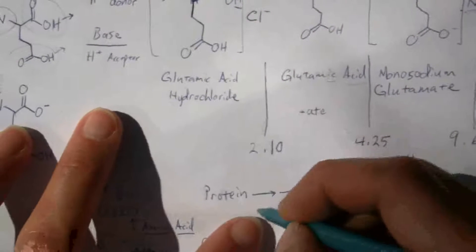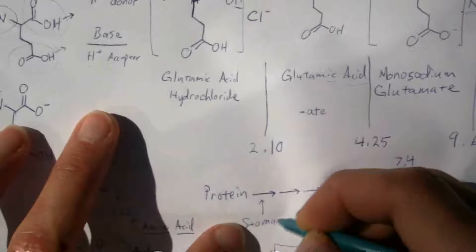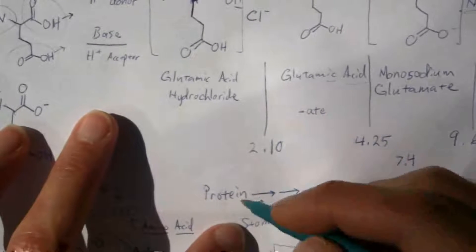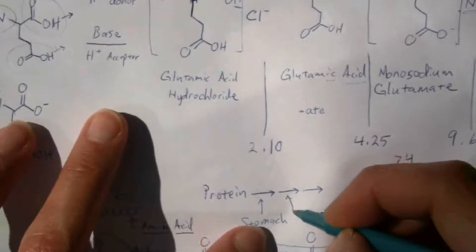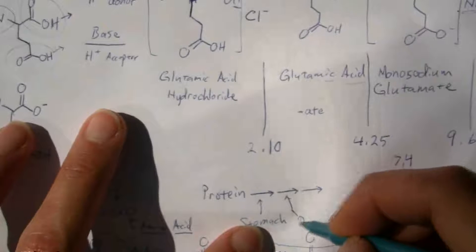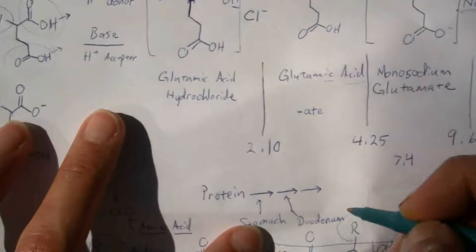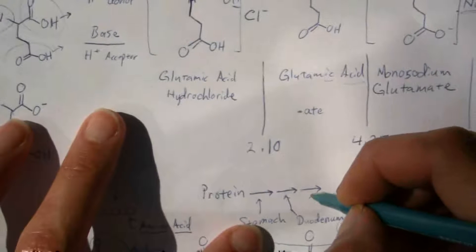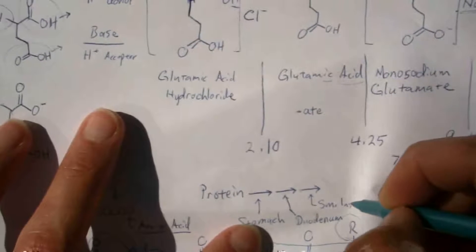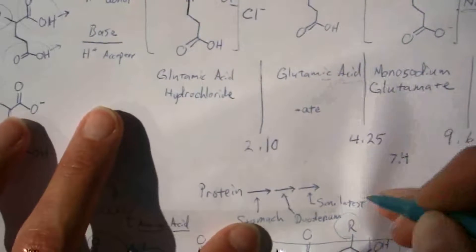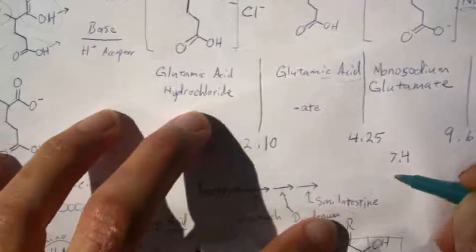First, it enters the stomach. After the stomach, it goes through the duodenum. And then after that, we have the small intestine. It's at the small intestine that we have the protein completely broken down as the free amino acids.